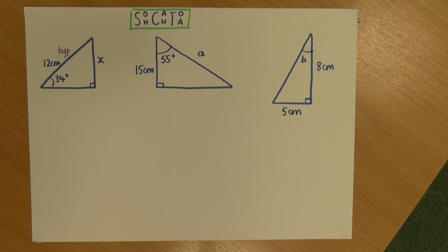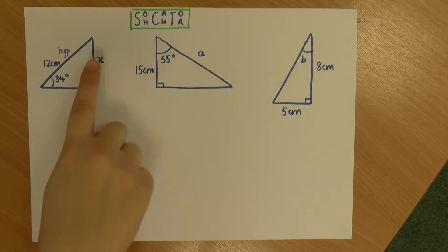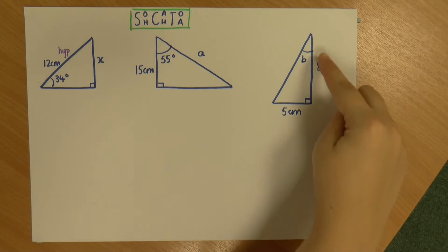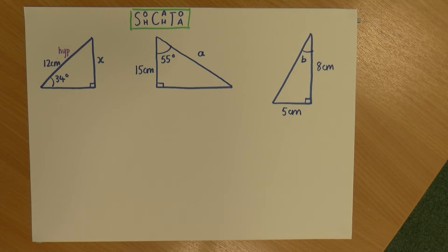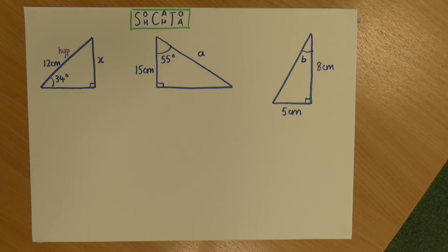Hi, this is Rachel, and we're going to look at finding missing lengths and angles in right-angled triangles using trigonometry. So I have three different questions here. In the first two, I need to find missing side lengths, and in the last one, I need to find a missing angle. Before we start answering any of these, we should be familiar with our acronym or equation for trigonometry.